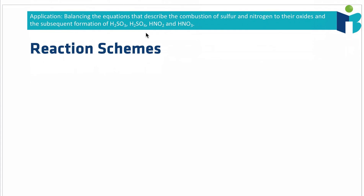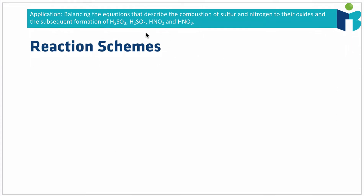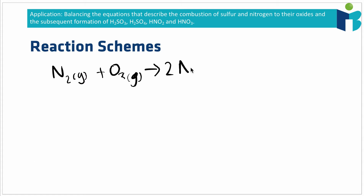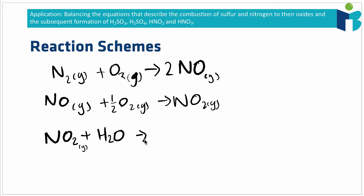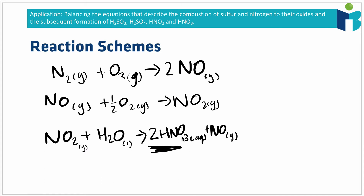Now let's think about the actual chemistry. In the case of nitrogen oxides, nitrogen gas reacts with oxygen gas under combustion conditions to produce nitrogen monoxide (NO). Nitrogen monoxide is unstable, so in the atmosphere in the presence of oxygen it reacts again to form nitrogen dioxide (NO₂). Nitrogen dioxide is then the species that interacts with water in the atmosphere to form nitric acid (HNO₃) — that's where the drop in the pH of rain comes from.